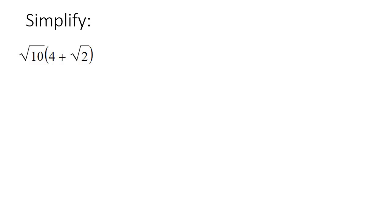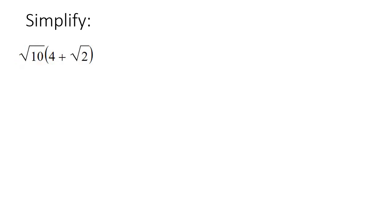So let's begin. When you multiply square root 10 by 4, you can't multiply the 10 and the 4 together because this 10 is locked inside the square root. So what you can do is just put the 4 in the front. That's just going to give you 4 square root 10.